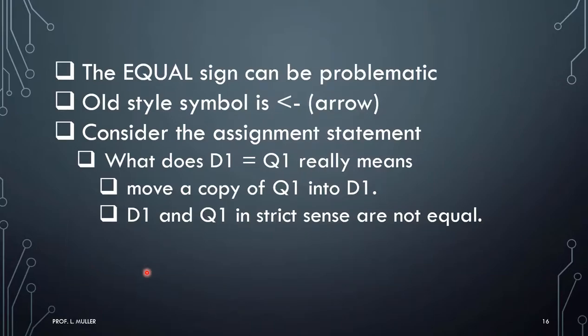Now sometimes the, this is just me being a pisnickety, the equal sign can be problematic. In the old style textbooks, people used an arrow. Because what does this mean? It really means you move a copy of Q1 into D1, where this is stating something of the equality of both items. So in the strict sense, I'm, it's not quite an equality here. This is the present, and this is, this is the present state, and this will be the future state for us.